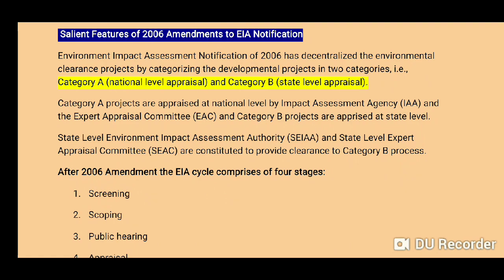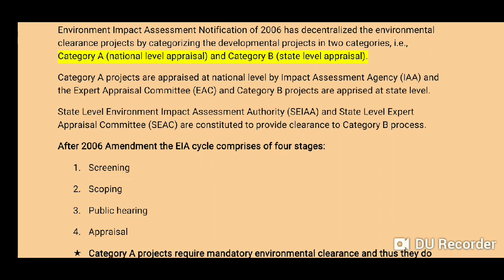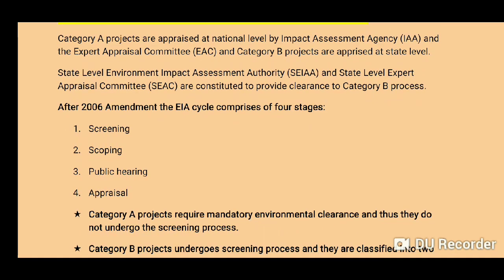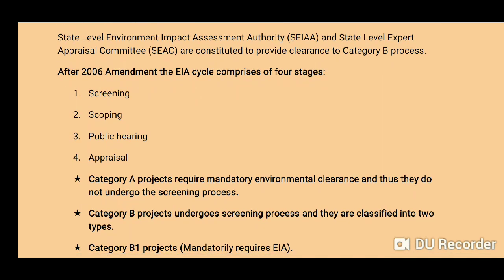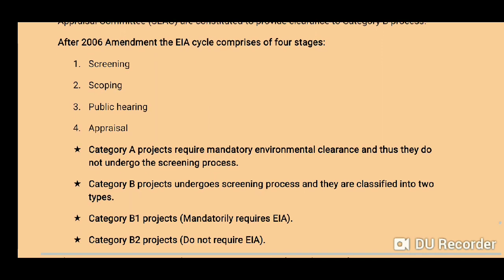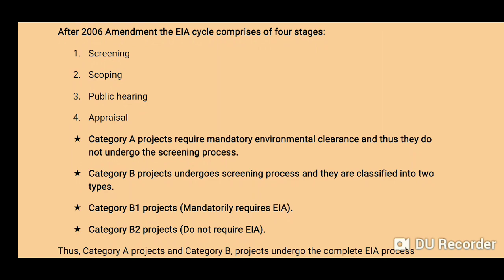The salient features of the 2006 amendments to the EIA notification: the EIA notification 2006 has decentralized environmental clearance by categorizing developmental projects into two categories — Category A, appraised at national level by the Impact Assessment Agency and the Expert Appraisal Committee, and Category B, addressed by the state-level appraisal committee.